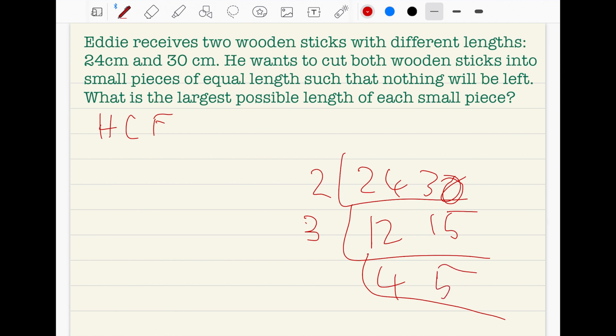Nothing else - four and five cannot be divided further. The highest common factor is six because three times two equals six.